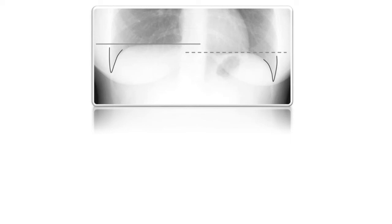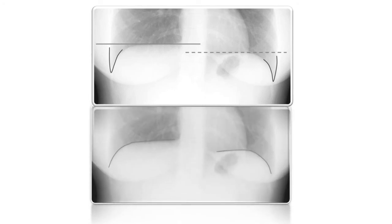The left hemidiaphragm usually lies a bit lower than the right hemidiaphragm. If the right hemidiaphragm is more than three centimeters higher than the left, we call it an elevated right hemidiaphragm. If the left hemidiaphragm rises to the level of the right, the left is also considered elevated. The right hemidiaphragm sits a bit higher, while the left can be pushed downward because the heart lies in front of it.